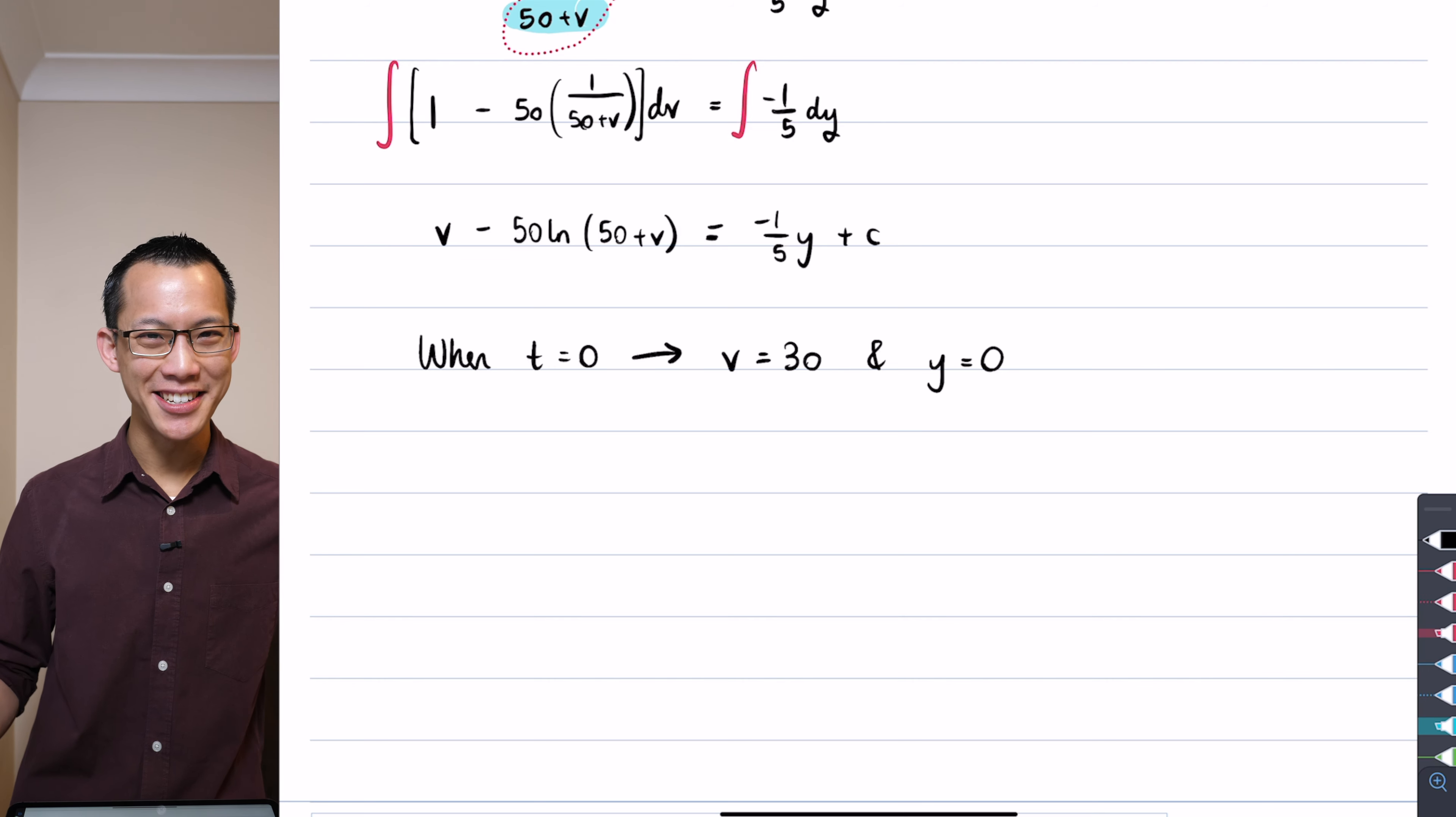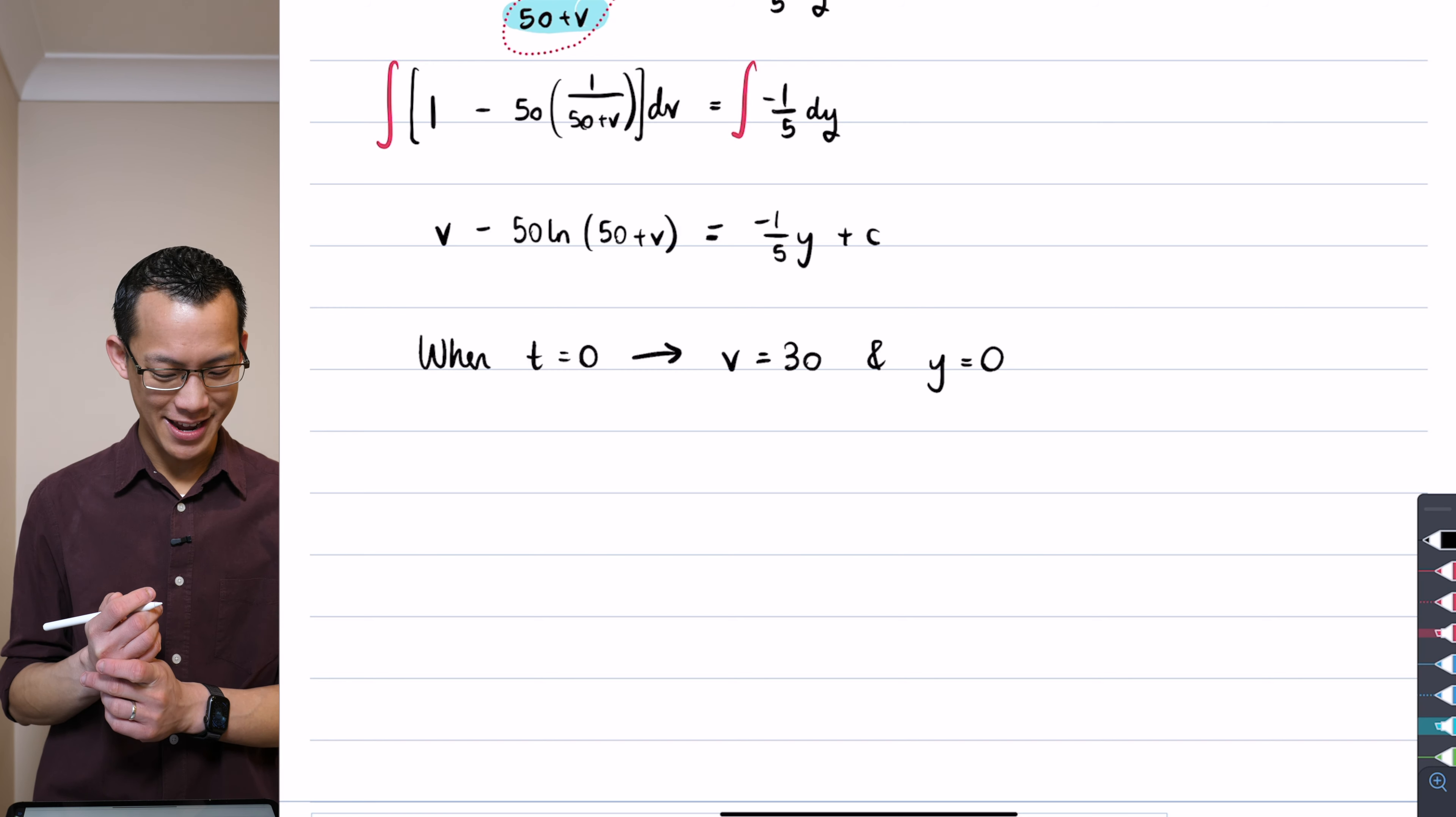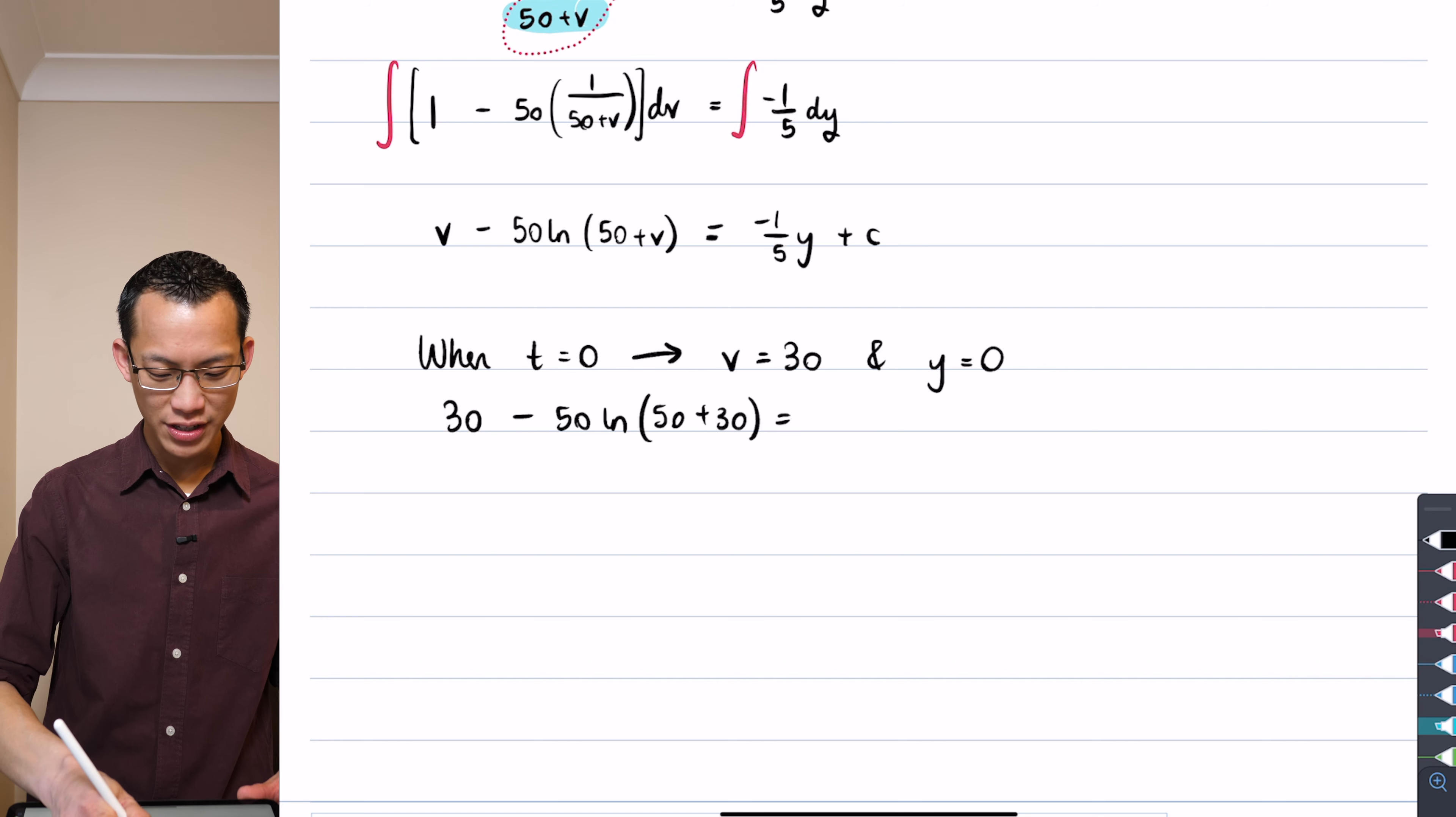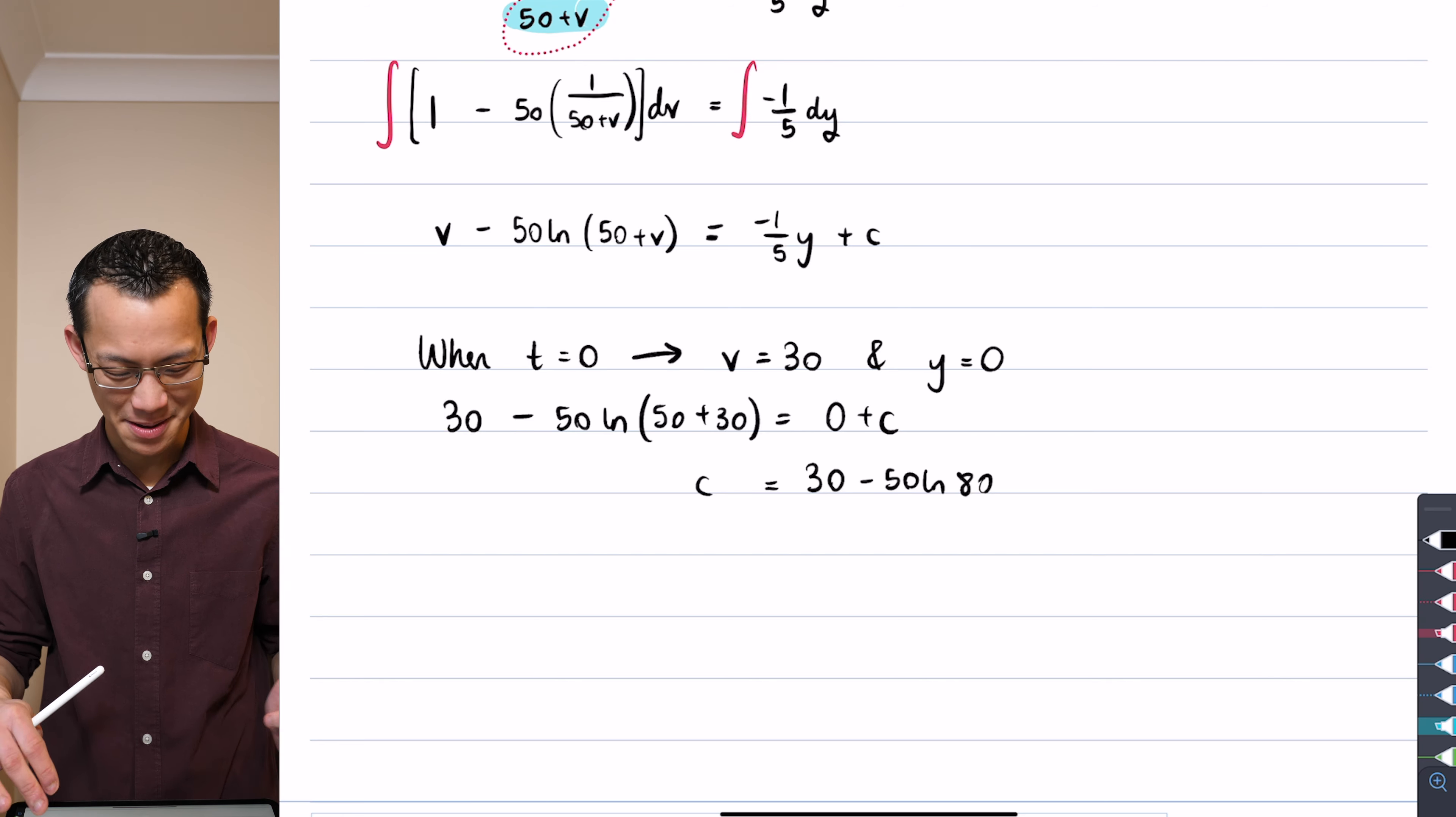Now I've got a couple of people putting it into the chat which is great when you get the same answer as someone else, but let's actually convince ourselves that this is the case. I'm going to put in a 30 over here minus 50 log of 50 plus 30. Those are the two places that v appears. You can see on the right hand side you're just getting zero plus c, so if I make c the subject it looks like I'm getting 30 minus 50 log 80 on the right hand side.